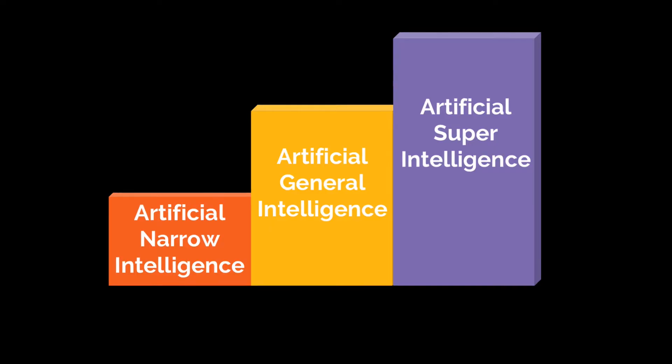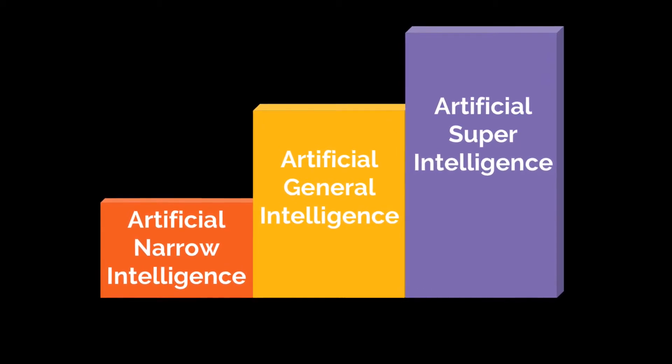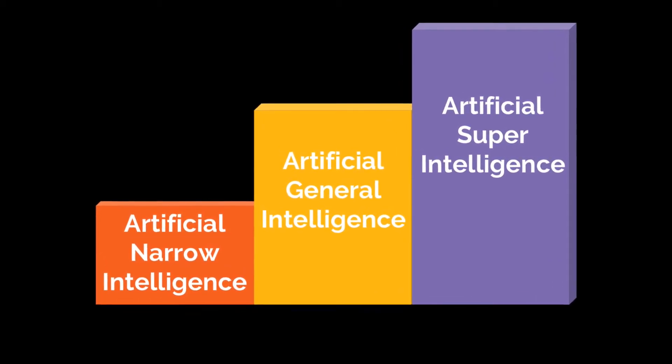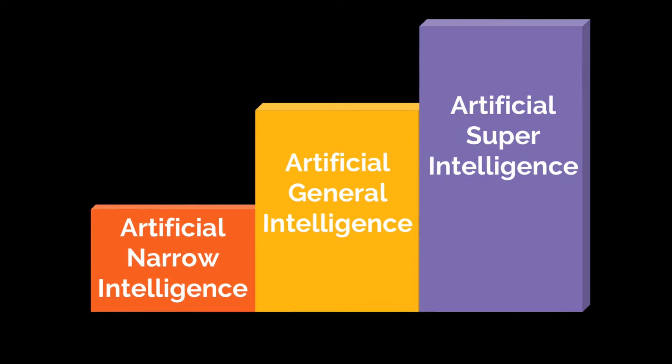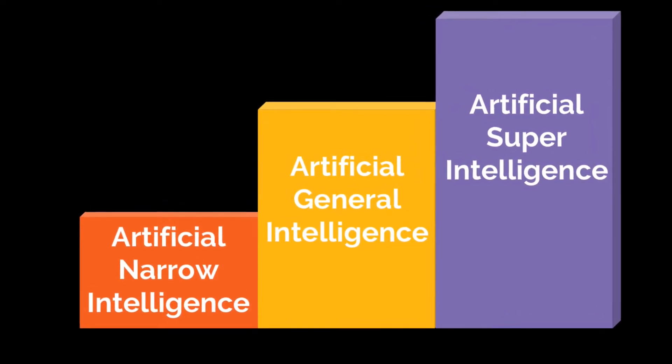Does it mean that humans are not good at playing Go? Relatively, it is possible. Now let's dig deep into the levels of AI. There are three major levels: the first is Artificial Narrow Intelligence, the second is Artificial General Intelligence, and the third is Artificial Super Intelligence — abbreviated as ANI, AGI, and ASI.